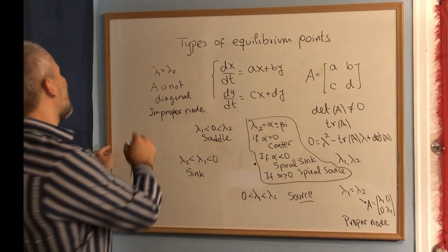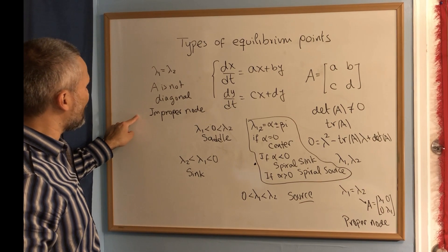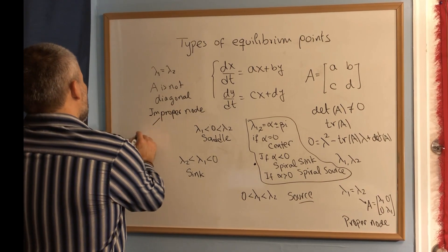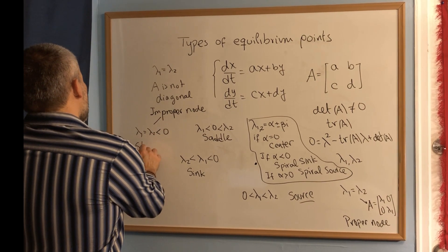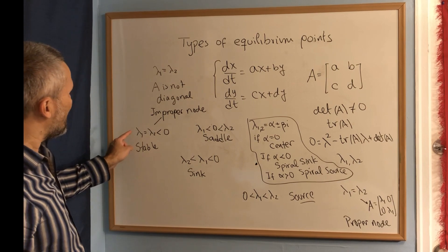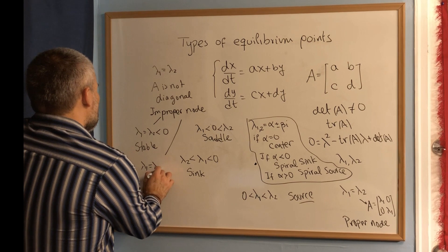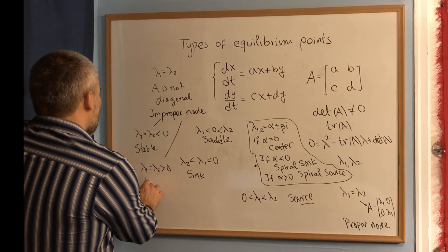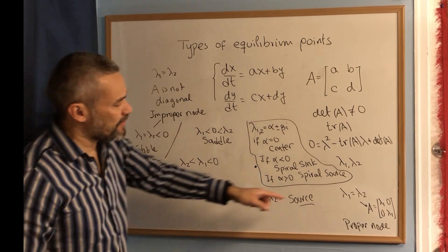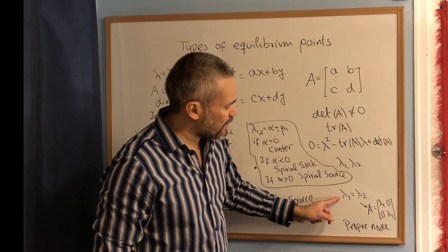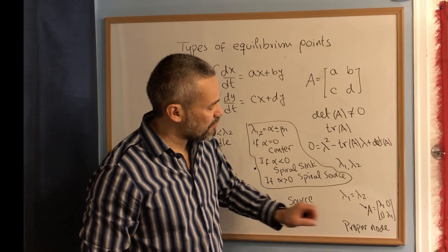For the improper node, if lambda 1 equals lambda 2 and is smaller than 0, we call it a stable improper node. And if lambda 1 equals lambda 2 and is bigger than 0, we call that an unstable improper node. The same stability terminology applies to the proper node as well.